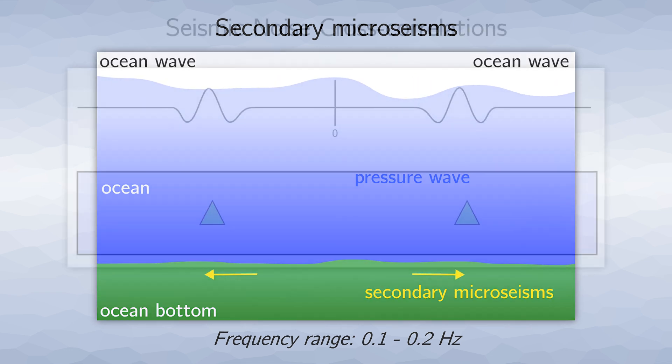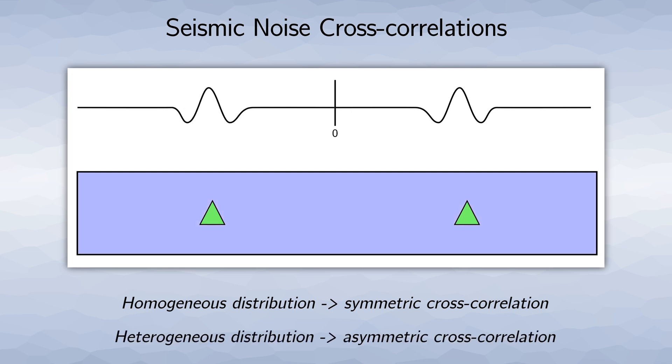To get information about where the noise sources are located, we look at the cross correlations of seismic noise data. If we had a completely homogeneous source distribution, we would have a symmetric cross correlation. In contrast, if the source distribution becomes more heterogeneous, for example a stronger blob on the right-hand side of the station pair, we can get an asymmetry in the cross correlation. So the asymmetry in the ambient noise cross correlations contains information about where the dominant noise sources are.